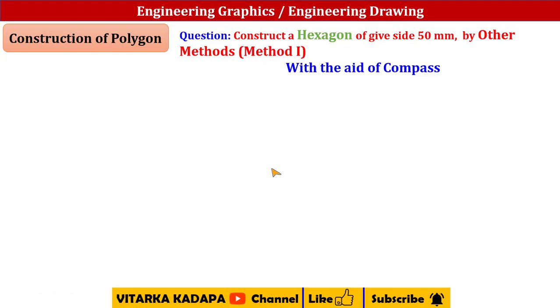Construction of a polygon. So now we are going to construct a hexagon of given side 50 mm by other methods. Earlier we have discussed a general method and now this is method one. Again we are trying to use a compass.